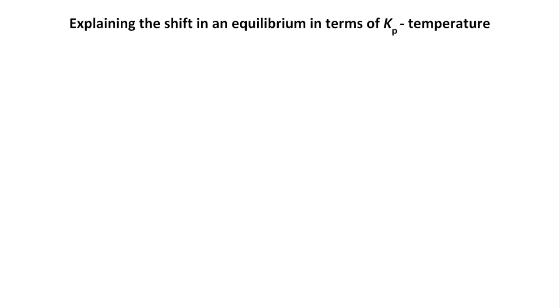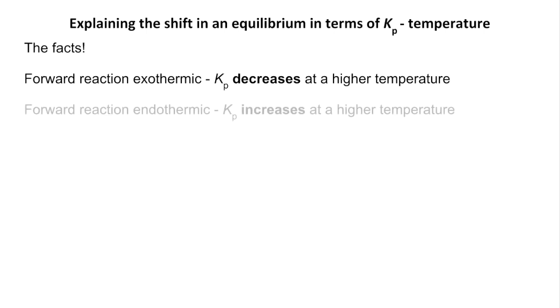So I'm going to finish off the video by explaining the shift in an equilibrium in terms of Kp. So we're not going to use Le Chatelier's principle like you can at AS. We're going to actually bring in the equilibrium constant. So we need some basic facts about Kp and temperature. If the forward reaction is exothermic, Kp decreases at a higher temperature. If the forward reaction is endothermic, Kp increases at a higher temperature.